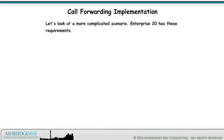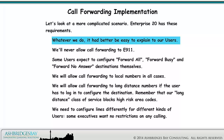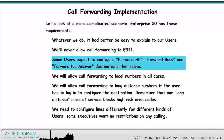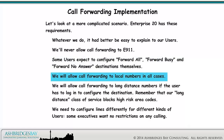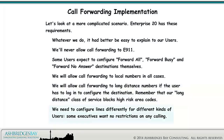Let's look at a more complicated scenario. Enterprise 20 has these requirements: whatever we do, it had better be easy to explain to our users. We'll never allow call forwarding to E911. Some users expect to configure forward all, forward busy, and forward no answer destination themselves. We will allow call forwarding to local numbers in all cases, and to long distance numbers if the user has to log in to configure the destination. Remember that our long distance configuration blocks high risk area codes. We need to configure lines differently for different kinds of users, and some executives want no restrictions on any calling.